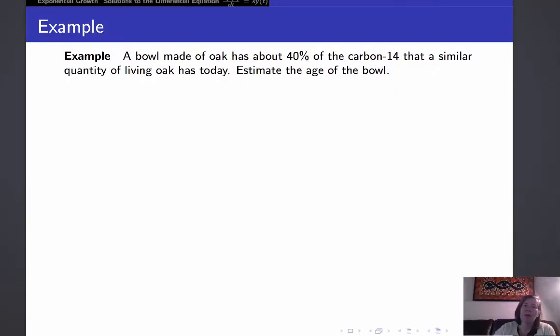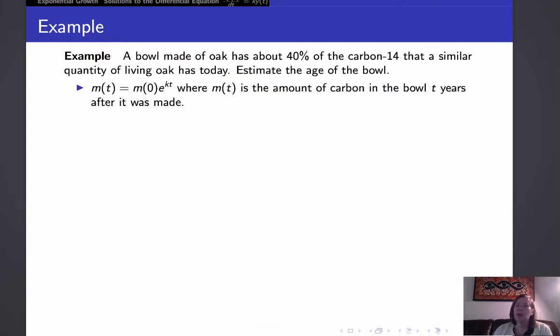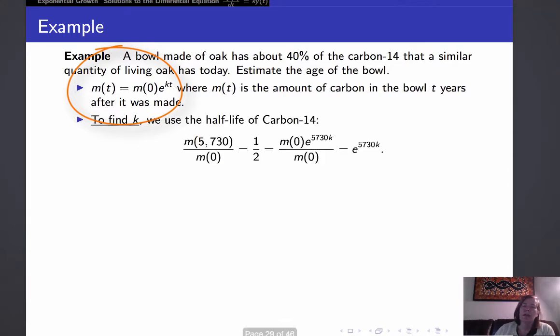How would we go about this? Well, we know that the amount of carbon in the object t years after it was made is the original amount, m of 0, times e to the kt. And now we have to find k, and we know the half-life of carbon-14.